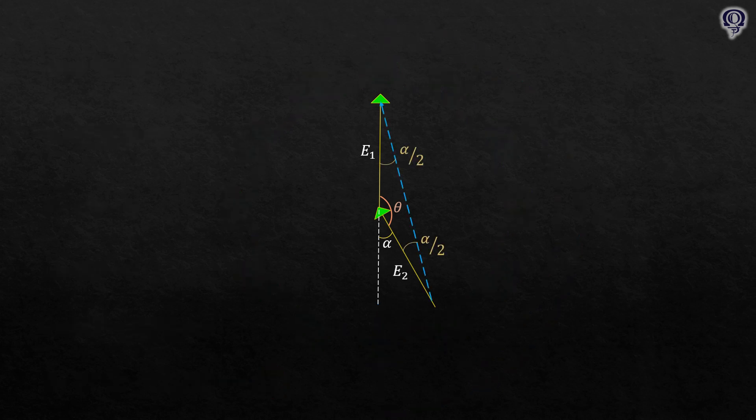We'll then focus on this triangle. We know E1 and E2 are radii of a circle, so the angle between E1 and the blue line must be alpha over 2. E1 and E2 are equal in magnitude. Adding these phases together gives us the resultant voltage.